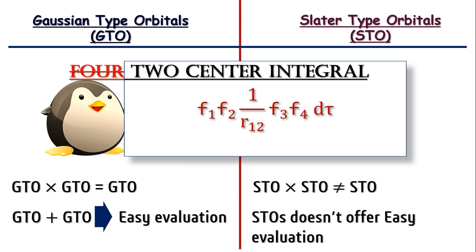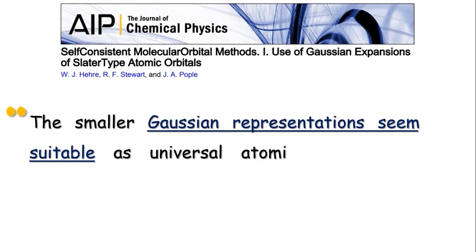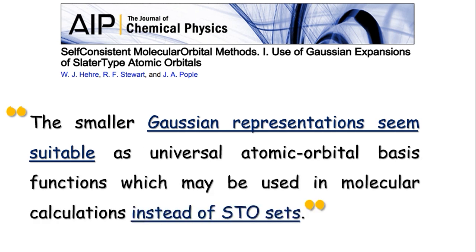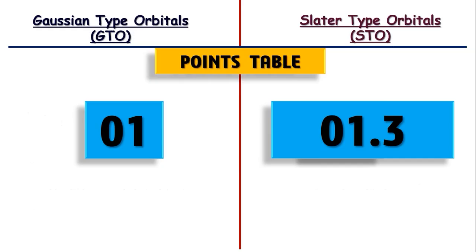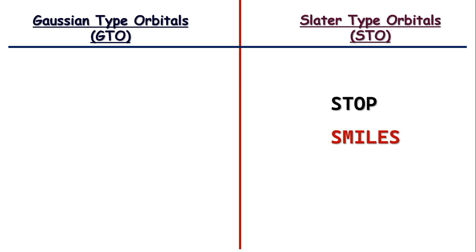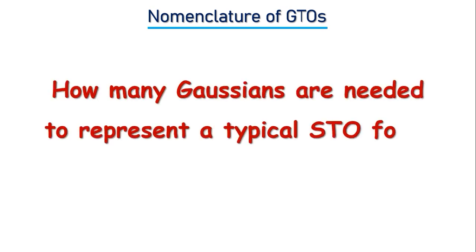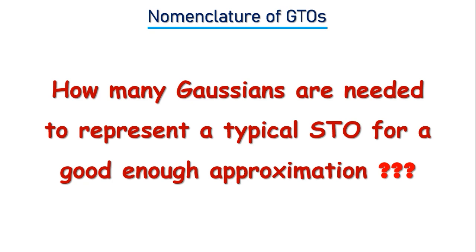In conclusion, to quote from that famous paper: 'The smaller Gaussian representations seem suitable as universal atomic orbital basis functions, which may be used in molecular calculations instead of STO sets.' Today, some ab initio packages like STOP or SMILES use Slater type orbitals, but most packages prefer Gaussian type orbitals. Now, just one little thing about the nomenclature of GTOs — but first, tell me: how many Gaussians do you think are needed to represent a typical STO for a good enough approximation?